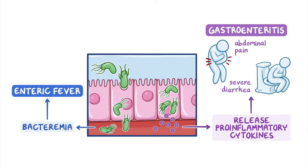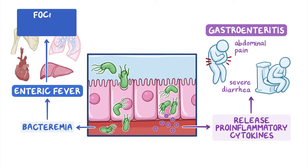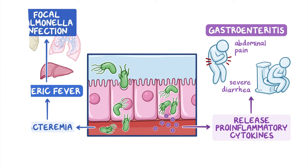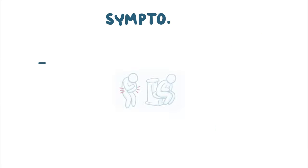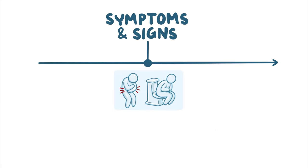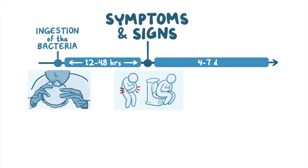From there, they can make their way to other organs like the liver, lungs, heart, and bone to cause focal salmonella infection. These symptoms and signs usually arise in humans between 12 and 48 hours after ingestion of the bacteria, and typically last for 4-7 days.